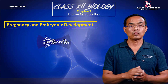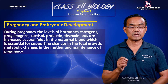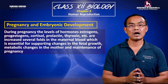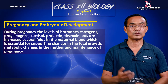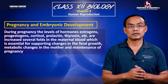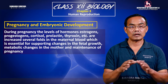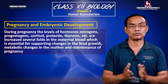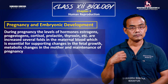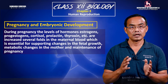During pregnancy, hormones such as estrogen, progesterone, cortisol, prolactin, and thyroxin are all present. These hormones influence various aspects including memory, growth, and immune system function.